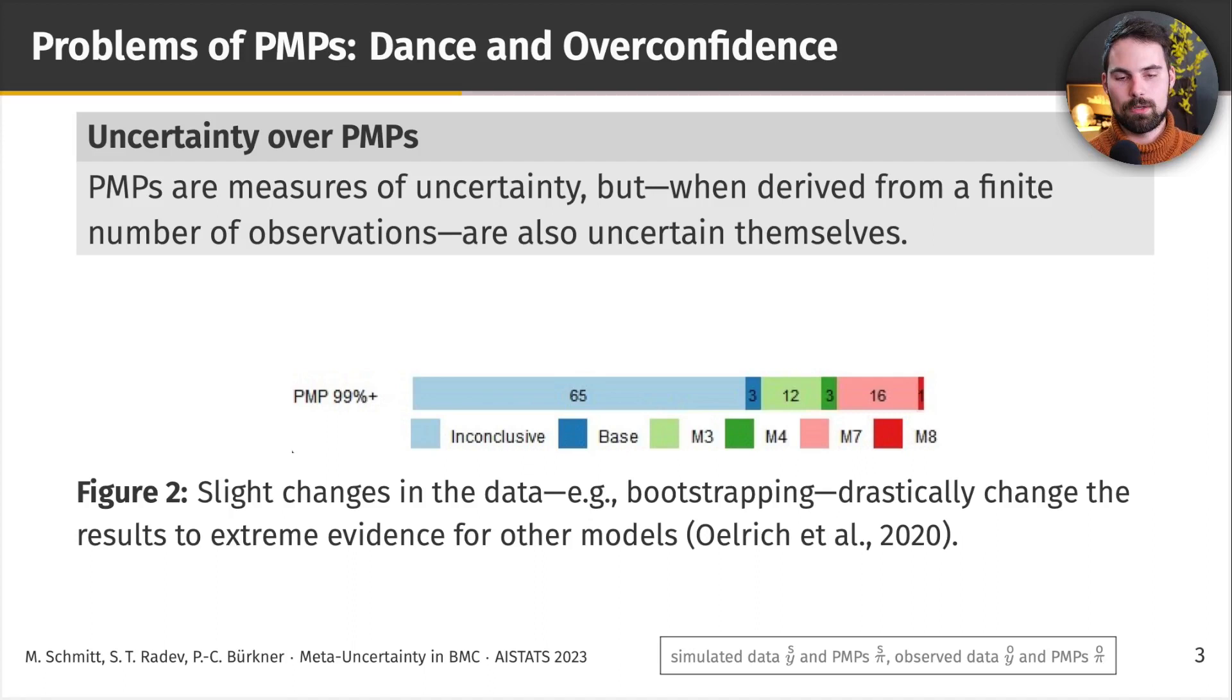So in this figure here, we see whether or not there has been a decision for one of the competing models with a posterior model probability of more than 99%. And in fact, we see, among those 100 bootstrap repetitions, in some cases, we see extreme evidence for model 3, for model 4, for model 7, or for model 8, just by slightly changing the data.